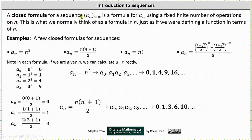A closed formula for the sequence a sub n where n is a natural number is a formula for a sub n using a fixed finite number of operations on n. This is what we normally think of as a formula in n, just as if we were defining a function in terms of n. Below we have four examples of closed formulas for sequences. Note that given n, we can calculate a sub n directly. The examples are: a sub n equals n squared; a sub n equals n times (n plus one) divided by two; a sub n equals n factorial; and a fourth more complicated formula.